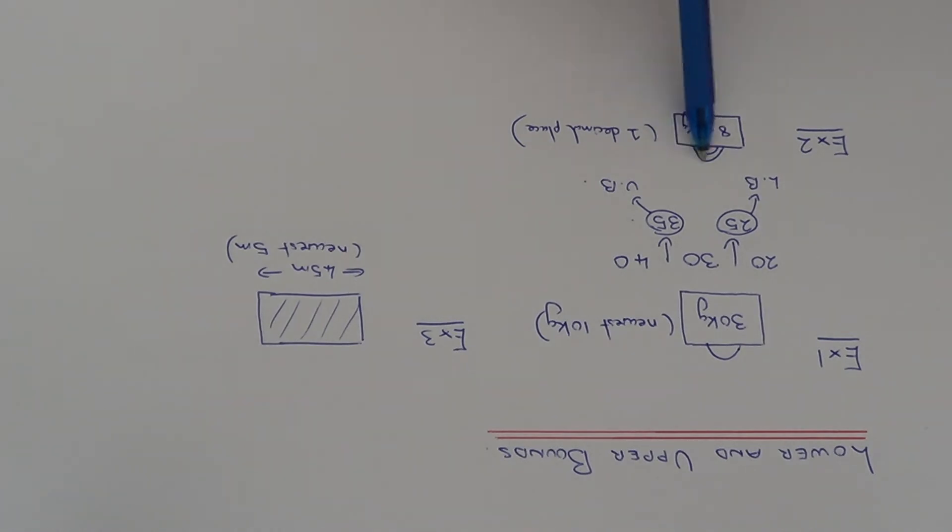So in this example we have another suitcase at the airport. This time it's been weighed in as 8.3 kilograms and this one's been rounded to one decimal place. So that means our scale at the airport was going up in 0.1, and so on. So write down 8.3.